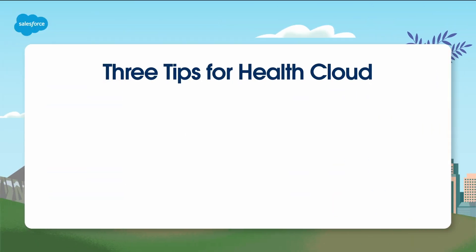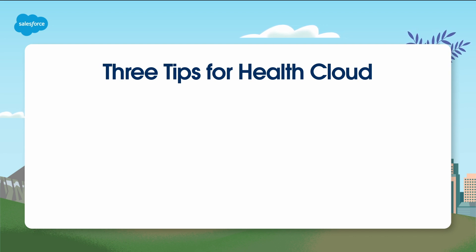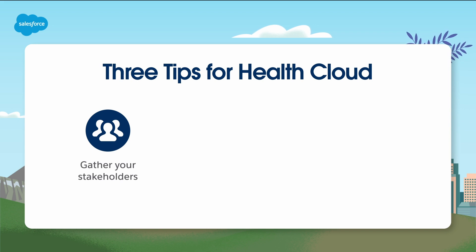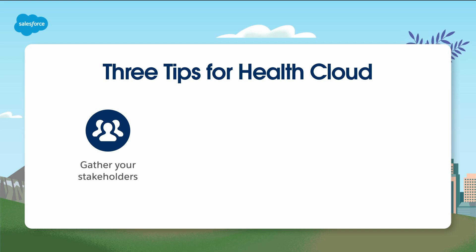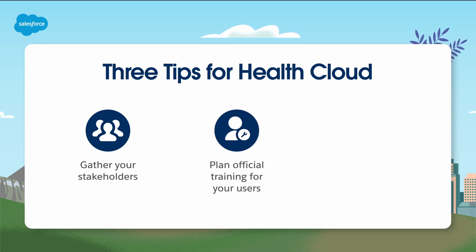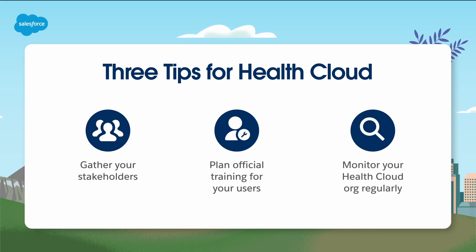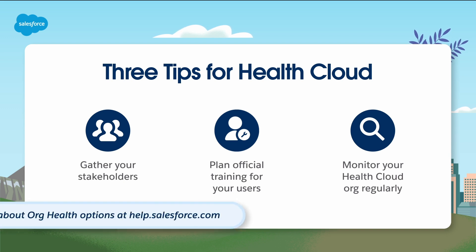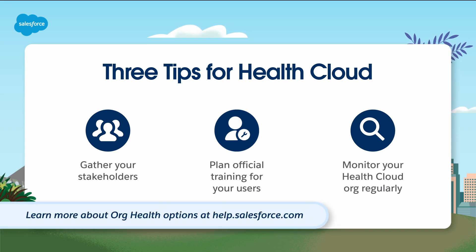Based on our experience helping customers, here are three tips to make your Health Cloud solution easier to start and maintain. First, gather your stakeholders before you start setting up Health Cloud — everyone should agree about your business requirements, the data model you'll use, and a project plan with a timeline. Second, plan official training for your users, as Health Cloud is a complex system and your users may need training to use it effectively. Third, monitor your Health Cloud org regularly, running the Salesforce Optimizer Lightning app to identify any issues and resolve them promptly. Learn more about org health options at help.salesforce.com.